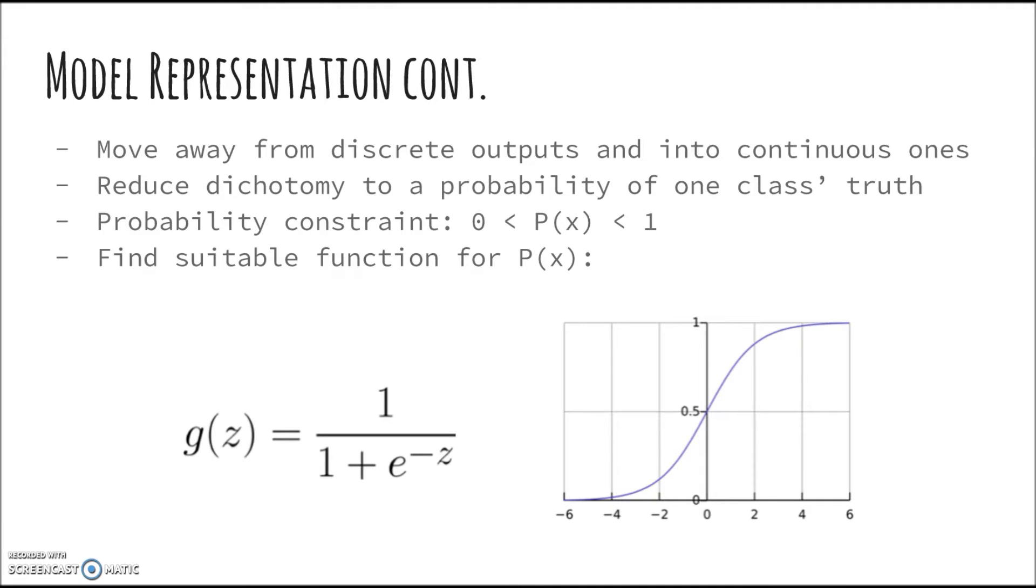Thus we should be moving away from discrete outputs of 0 and 1 and instead into continuous ones. What we do is we reduce the dichotomy of the variable into a probability of the truth of one class. For example, instead of representing a cancer tumor as being benign or malignant, we represent it as the probability of being malignant on a sliding scale of 0 to 1. All probabilities are between 0 and 1 inclusive, so we need a function that can simulate this.